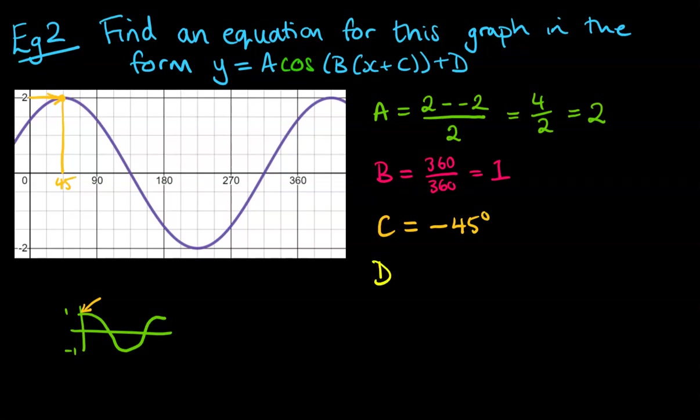And finally the vertical shift, well you can see actually straight away from this, it's had no vertical shift, but just for the fullness of doing this in the way that you've seen on how to work out D, which is to average out the maximum and the minimum, then we get 0. So the equation for this graph is 2 cos x minus 45 degrees. We don't have the B in there because it was just 1, and we don't have the D because that was a 0.